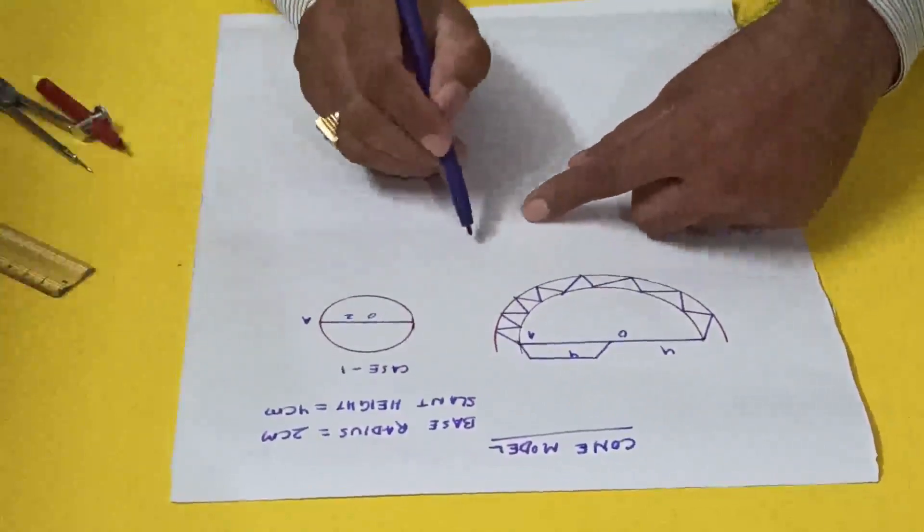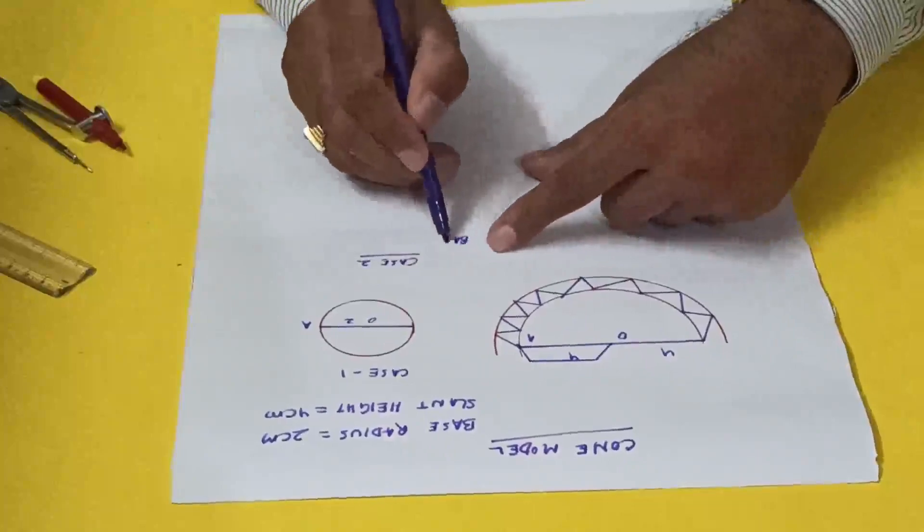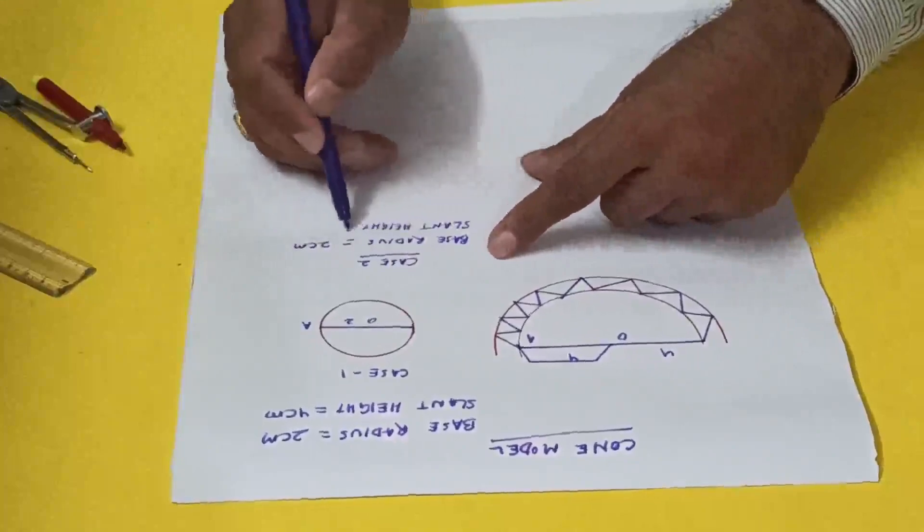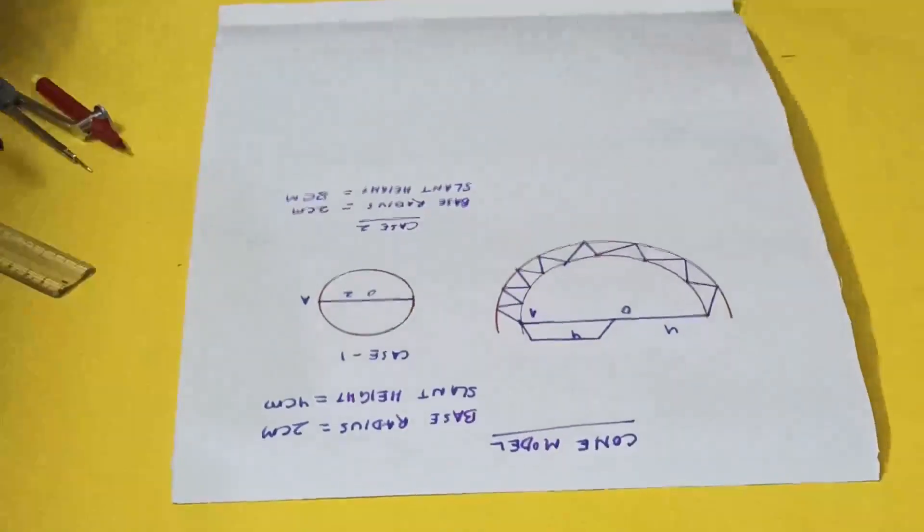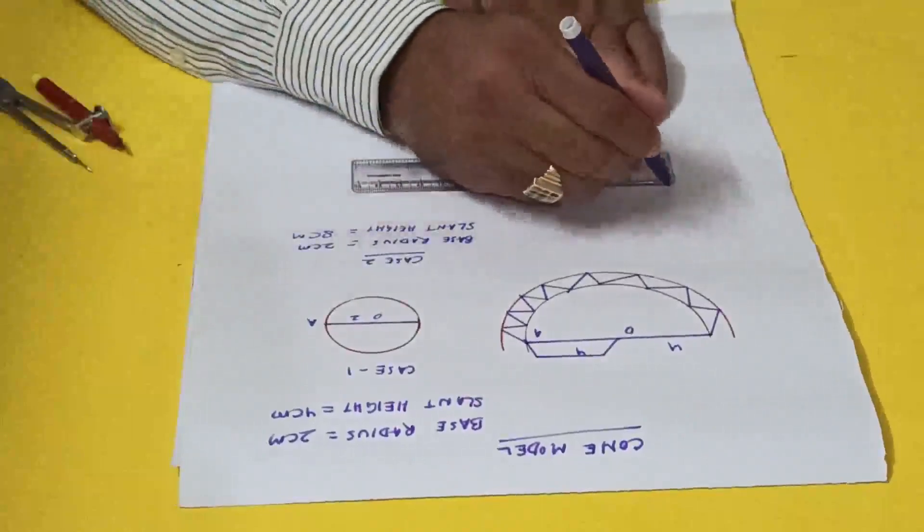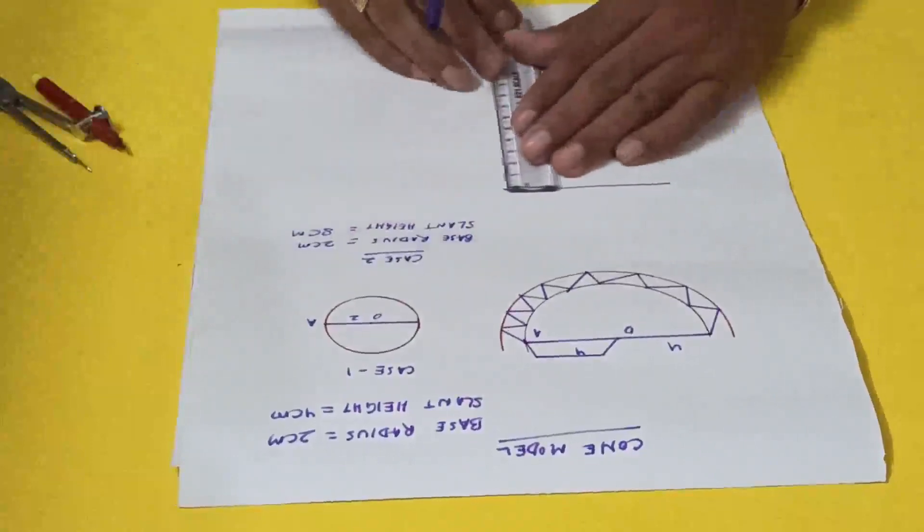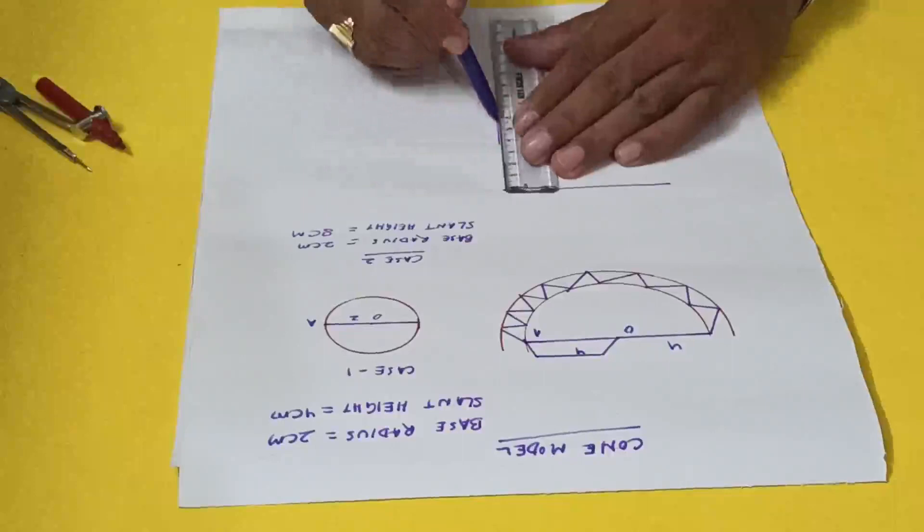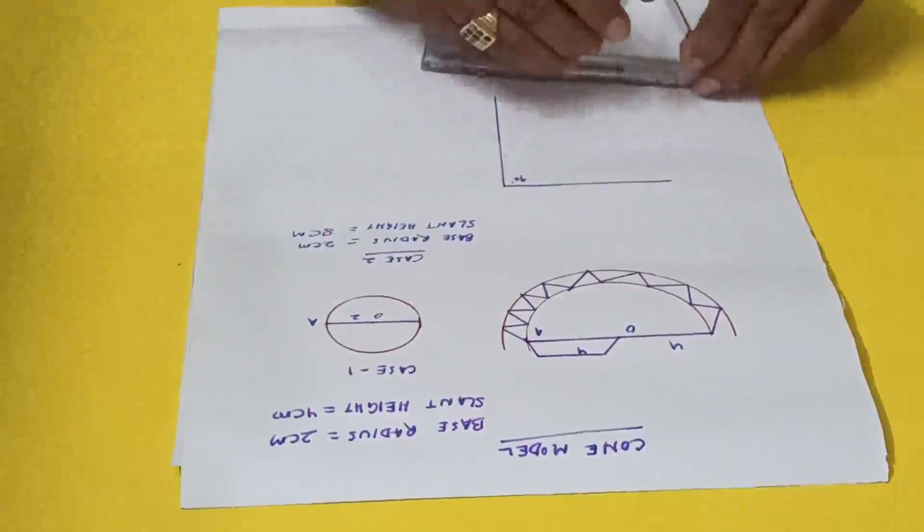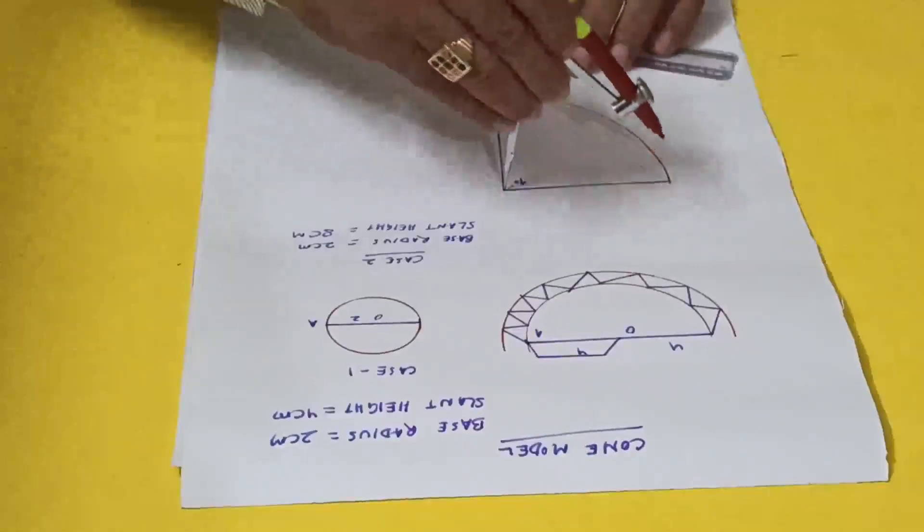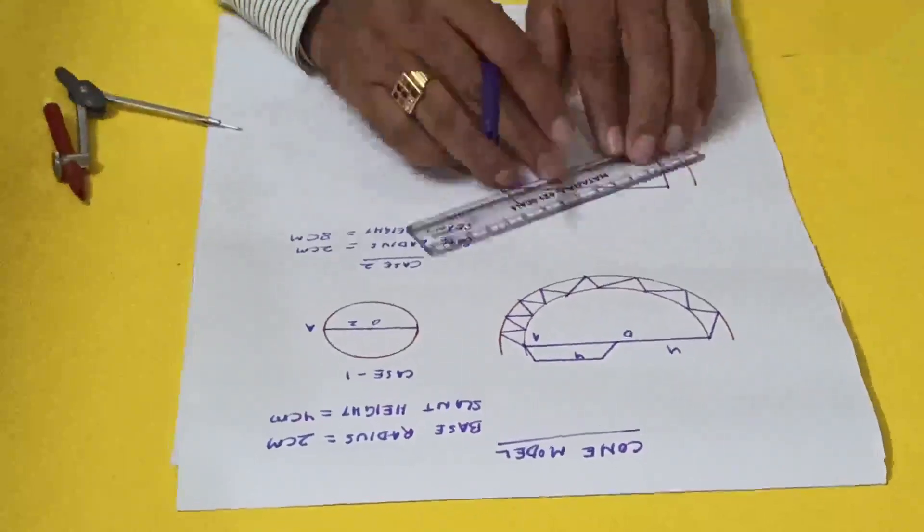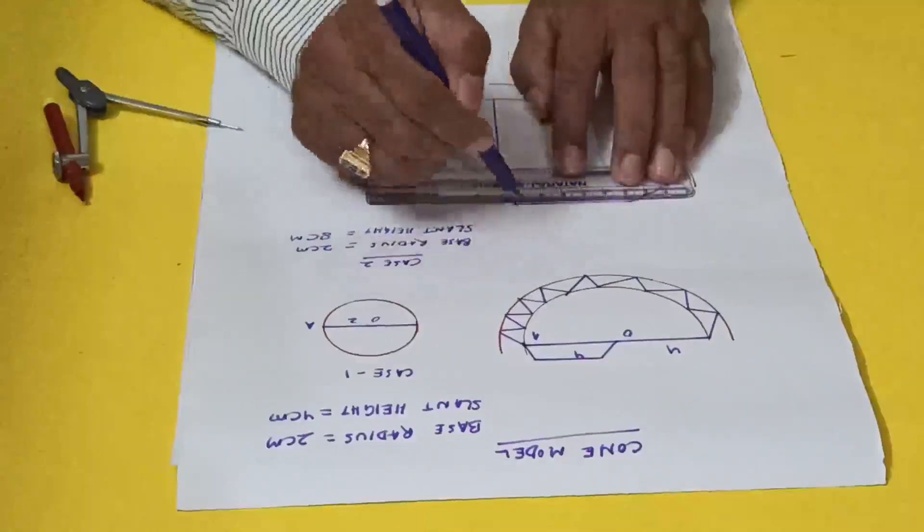This is the same base. The base radius is 2 centimeters and slant height is 8 centimeters. Now for this, you have to draw 8 centimeters at 90 degrees. For the border, take one centimeter and we will mark it.